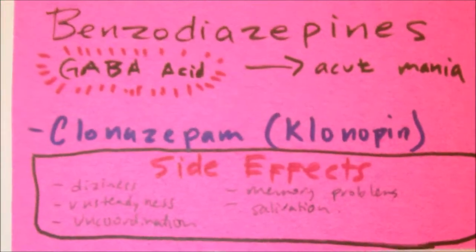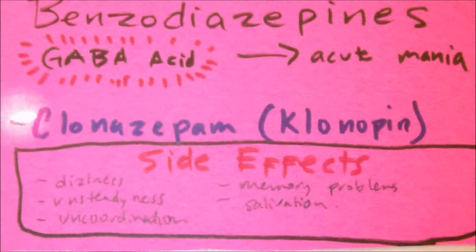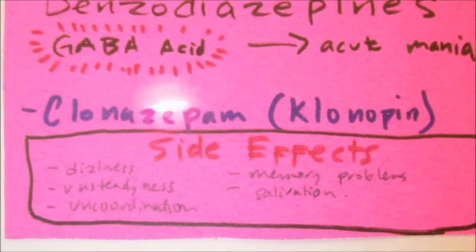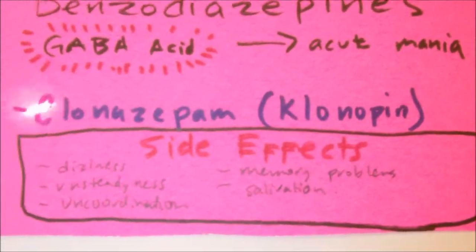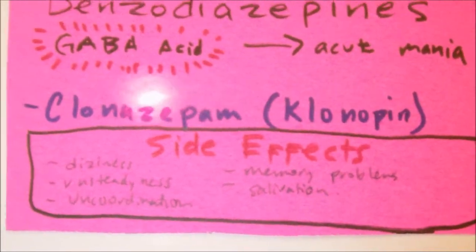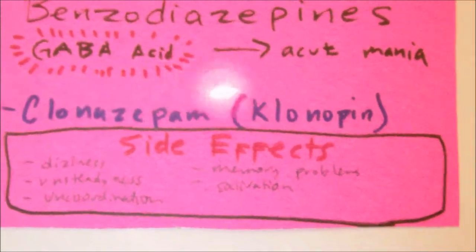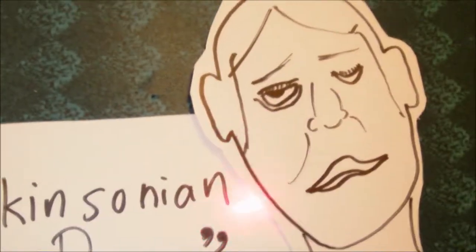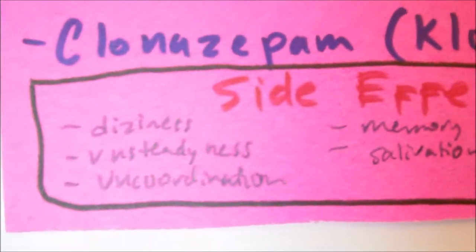We need to educate our patients and let them know that clonazepam decreases the levels of carbamazepine if combined. Also, if clonazepam is combined with certain antidepressants, anti-epileptics such as phenobarbital and phenytoin, certain antipsychotics, or even alcohol, it can result in severe enhanced sedative effects — so we need to make sure we educate the patient.